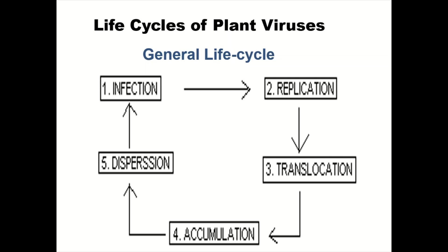If we discuss the life cycle of plant viruses, there are different stages. In the first stage, infection takes place. In the second stage, replication of the virus takes place. In the third stage, translocation of the virus occurs. In the fourth stage, accumulation of both DNA or RNA and protein takes place. In the fifth stage, dispersion of the virus takes place, followed by infection again, and the next cycle starts.